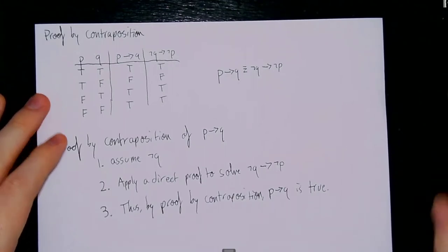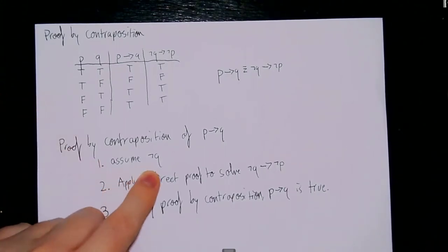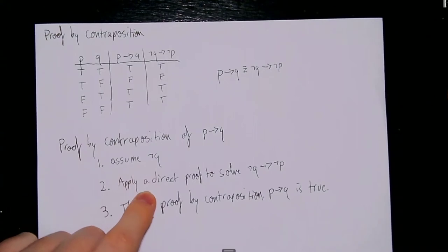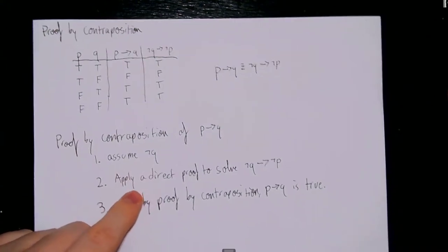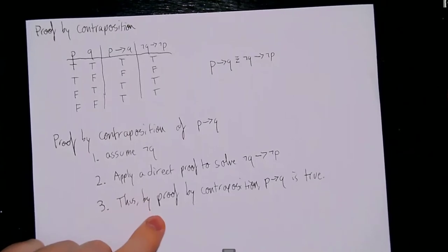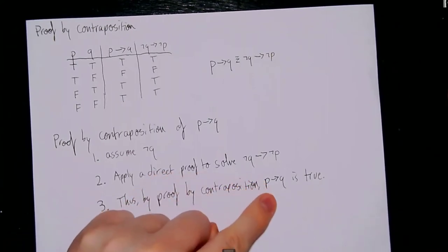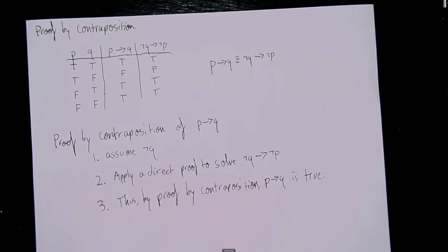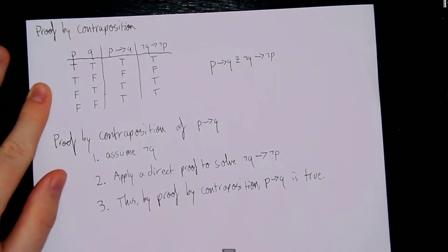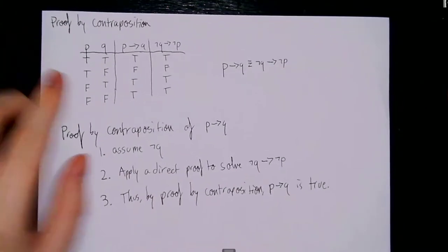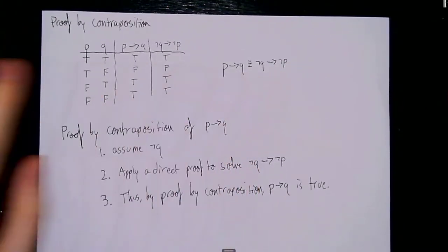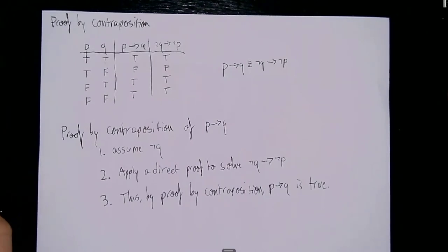We're going to prove that not-q implies not-p in exactly the same way that we would do it if it was a direct proof. This technique is going to be very similar, except for the fact that we're changing our assumption from p to not-q. Then we'll show that not-q implies not-p is true using a direct proof. And then we can say, thus by proof by contraposition, if-p-then-q is true.